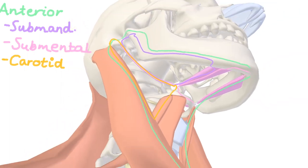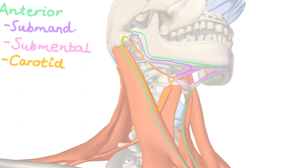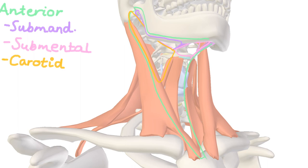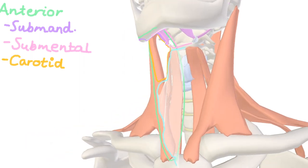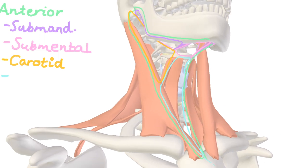We've almost completed the components of the anterior triangle. There's one patch inferiorly that is yet to be filled, and that's known as the muscular triangle. The borders of that being the hyoid bone, the omohyoid, the sternocleidomastoid, and the midline of the neck. Inside we have the thyroid and parathyroid glands. That's the muscular triangle — the last of the internal triangles within the anterior triangle of the neck.